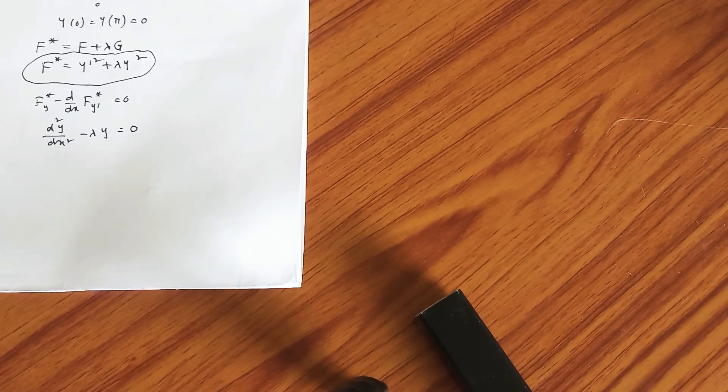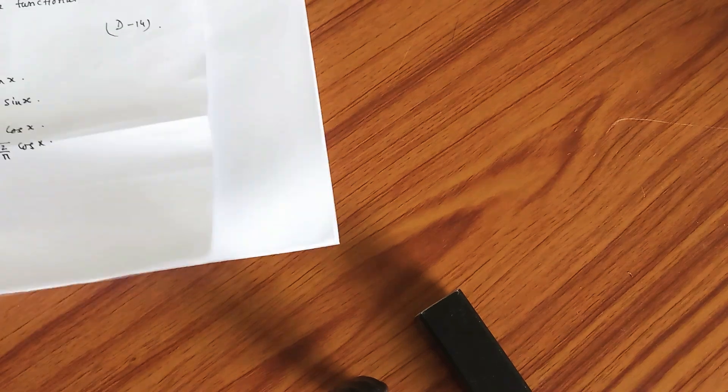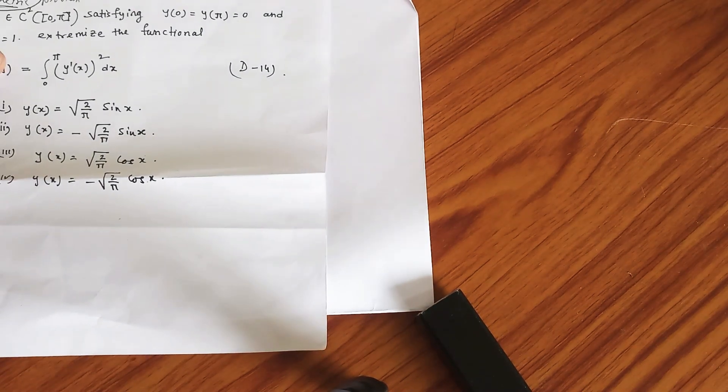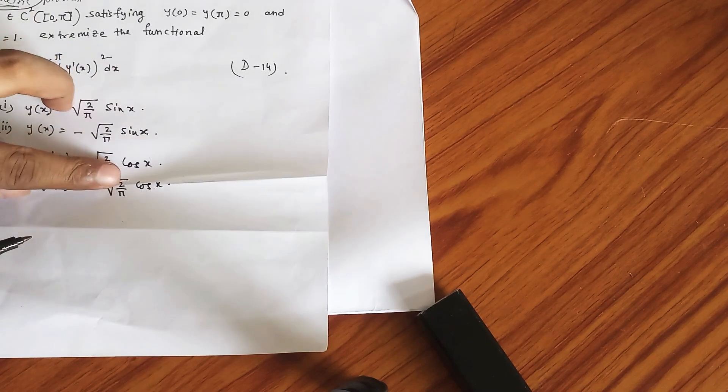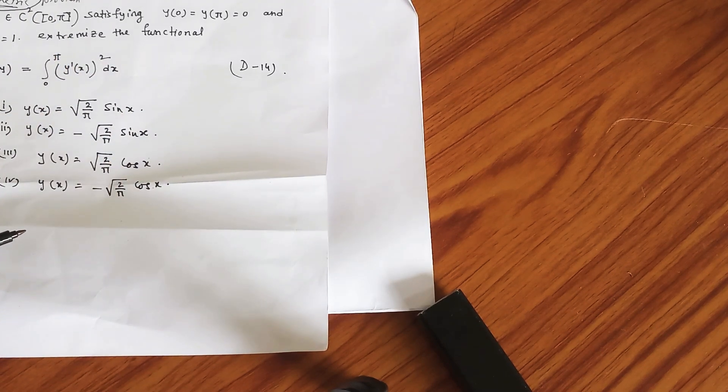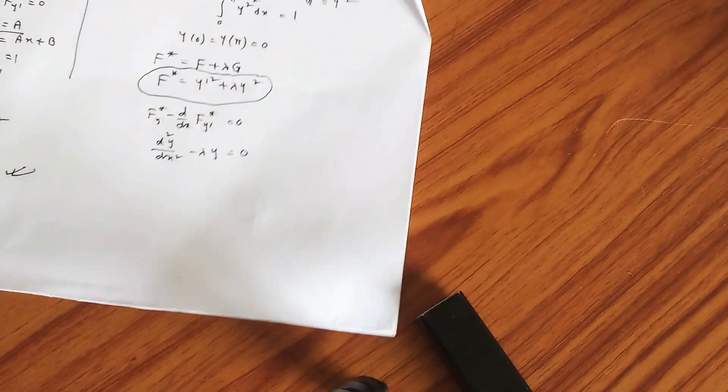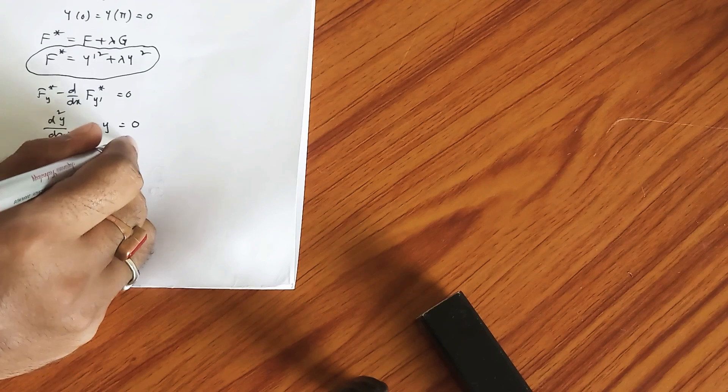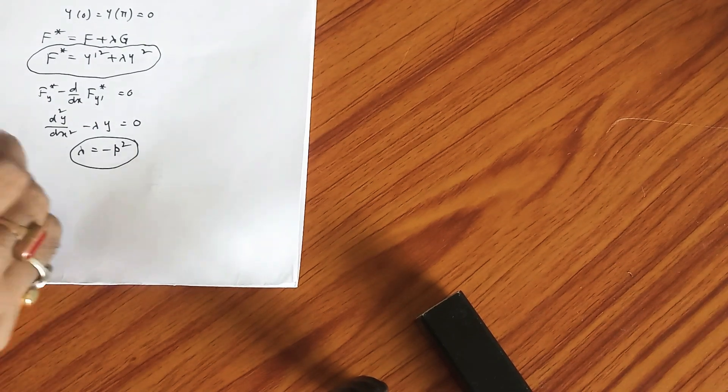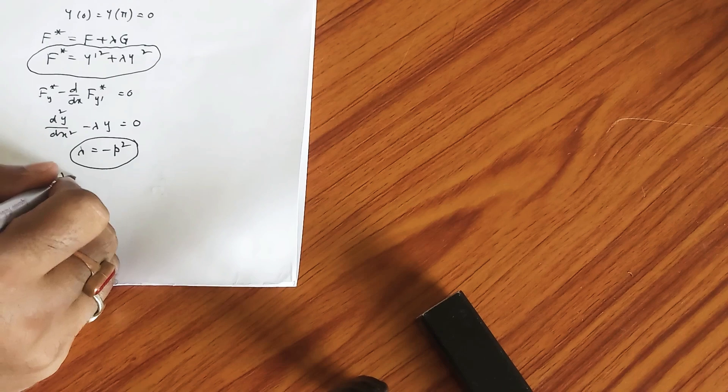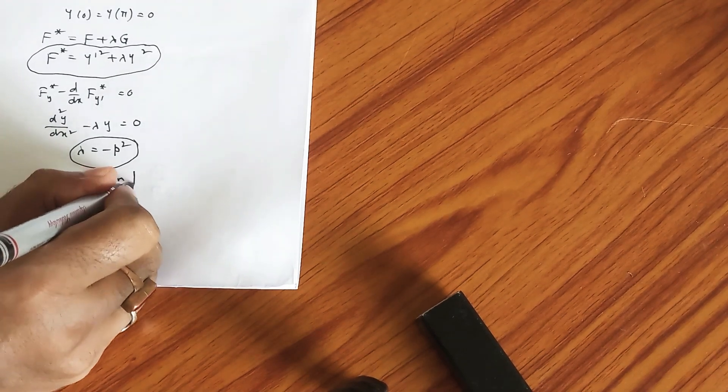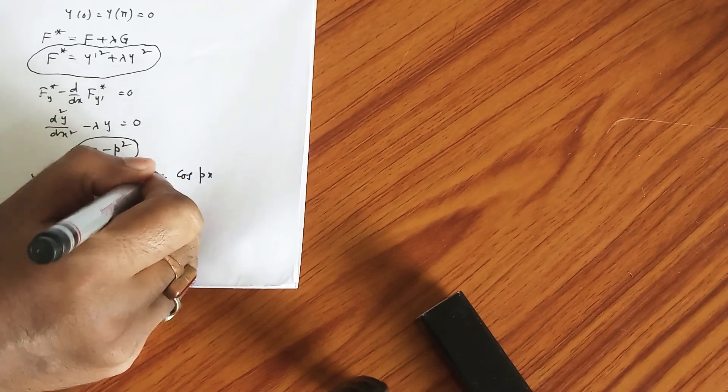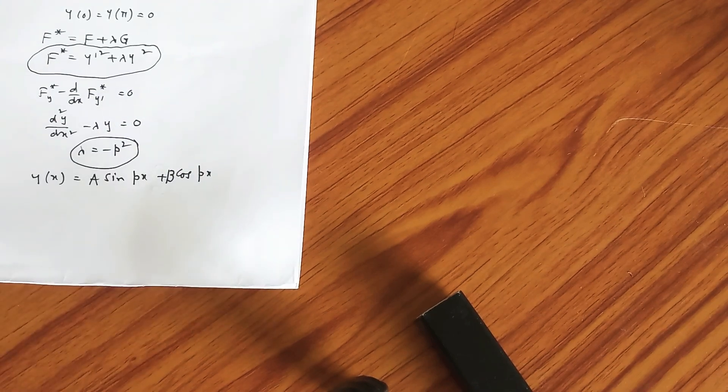Now observe the options again. Look at these - all the options are involved in sin x, cos x and all these steps. Obviously, you can guess that you should take lambda as minus p² something like that, so that at the end you will get y(x) equals a sin(px) plus b cos(px).